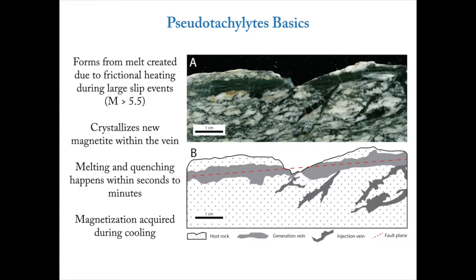I'm showing a photograph here with a centimeter scale. You can see a pseudotachylite vein moving from left to right across the image — that's the fault surface itself. There's another kind of pseudotachylite feature called injection veins, where some of the melt is actually forcibly injected into the surrounding host rock, usually along pre-existing mineral fabrics like SC fabrics. For the purposes of this study, we were examining pseudotachylites forming primarily along the fault surface itself, not along the injection veins.